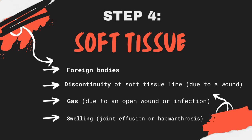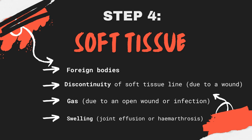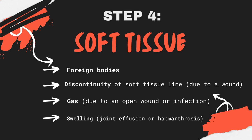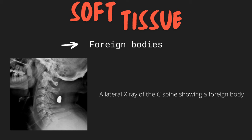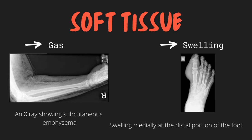The last step of the ABCS approach involves looking at the soft tissues. Abnormalities to look out for include the presence of foreign bodies, discontinuity of the skin surface or dressings which could imply a wound, gas which can be seen due to an open wound or infection, and swelling as a possible sign of infection, haemarthrosis, or joint effusion. An example of a foreign body is shown on a lateral x-ray of the C-spine, with a foreign body behind the C3 and C4 vertebrae. Another x-ray shows subcutaneous emphysema, and a further example shows soft tissue swelling occurring medially at the distal portion of the right foot.